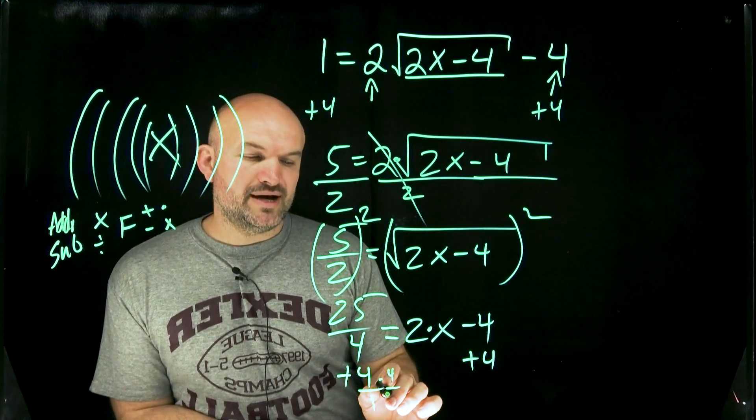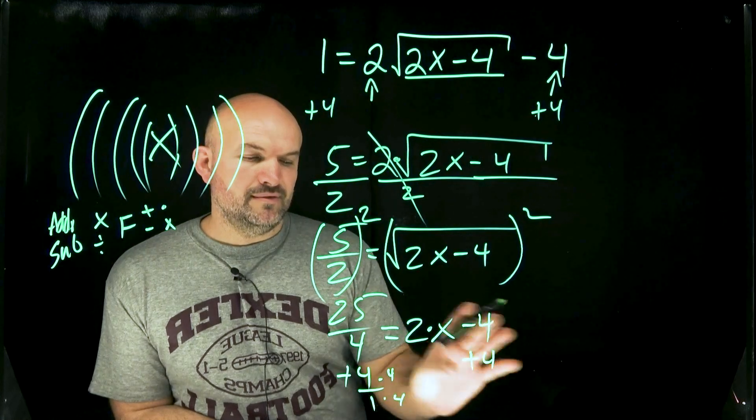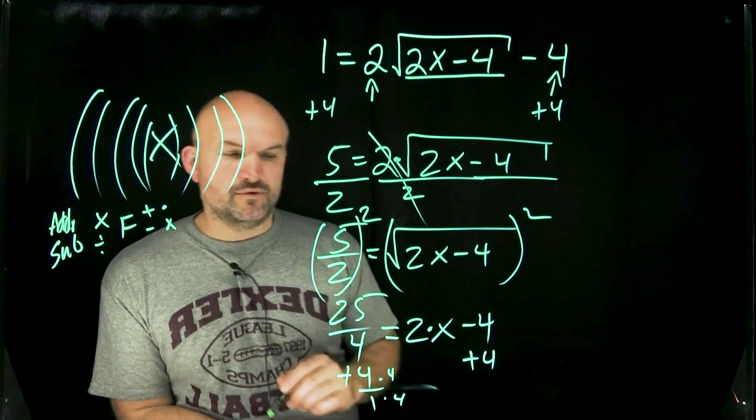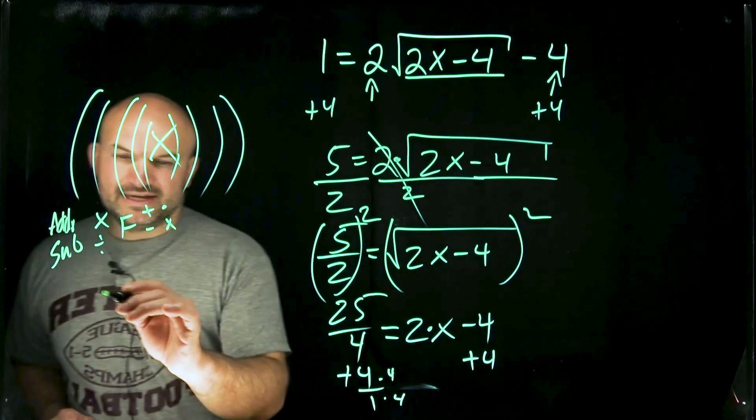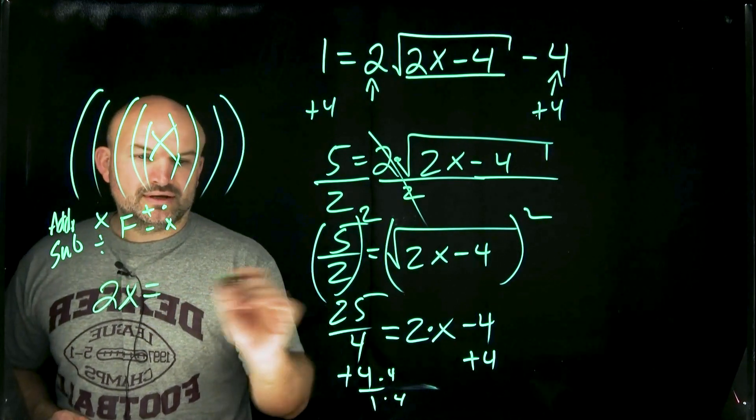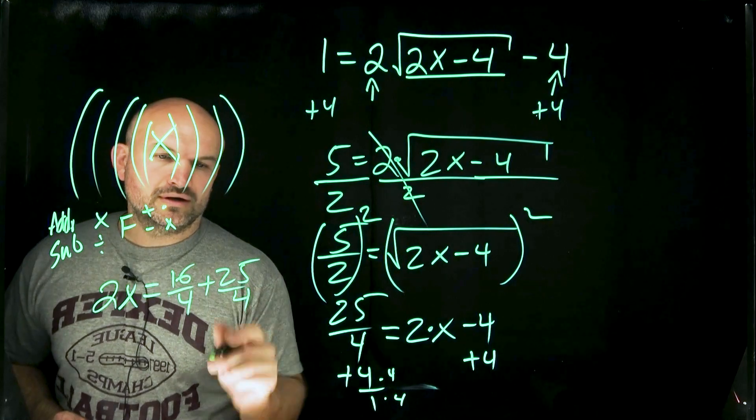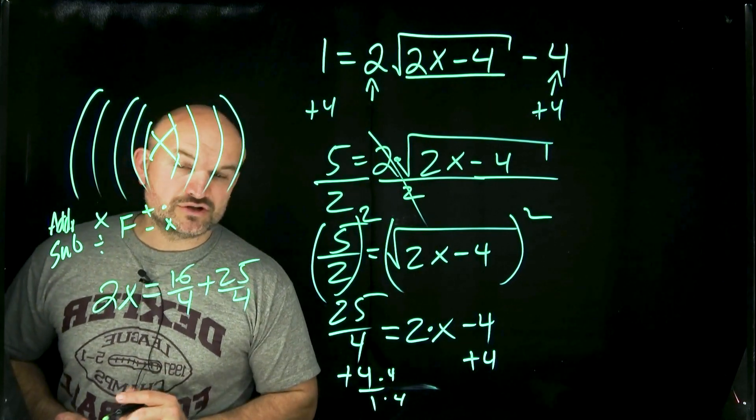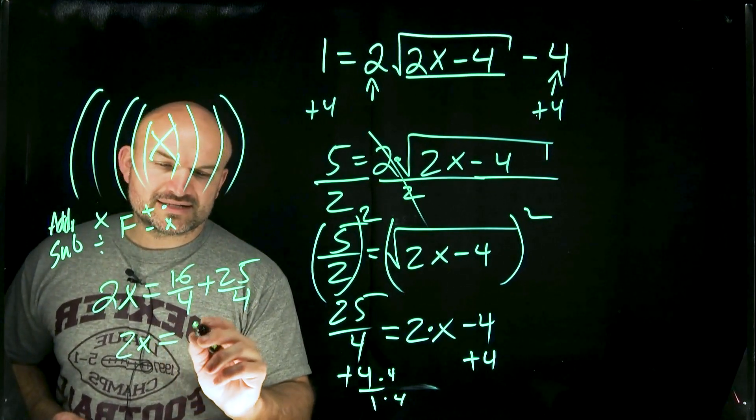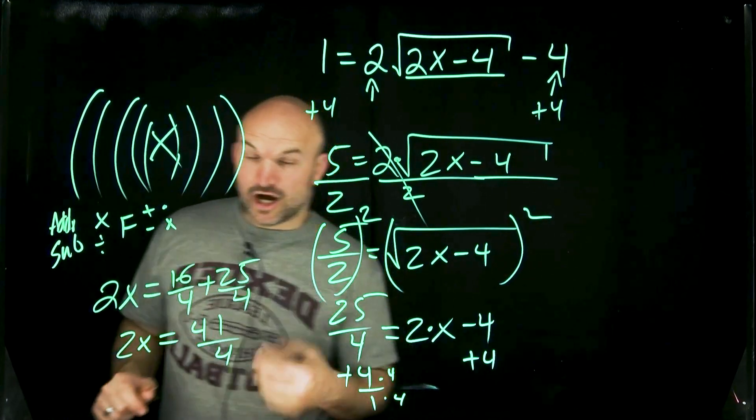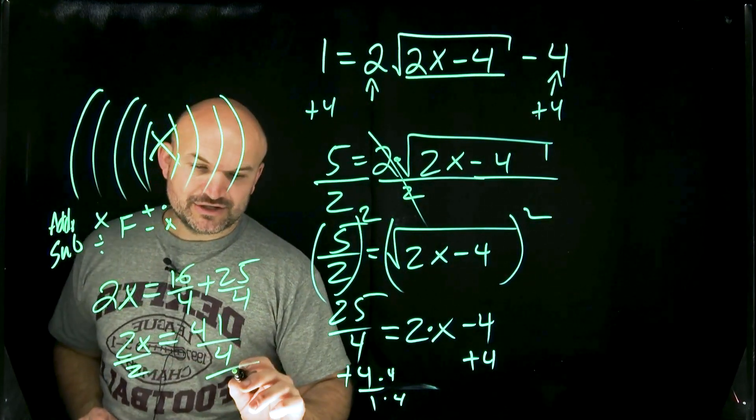So if you multiply by 4 over 4, then what that's going to give you is 16 over 4. So now what I have is 2x is equal to 16 over 4 plus 25 over 4. Well, 16 plus 25 is going to be 41. So 2x is equal to 41 over 4.